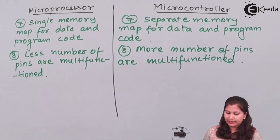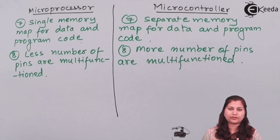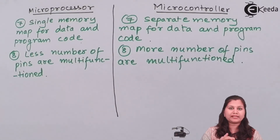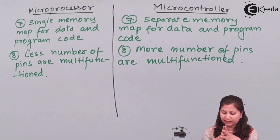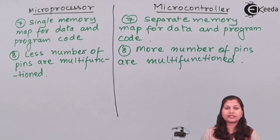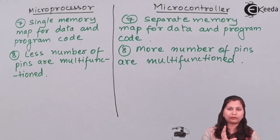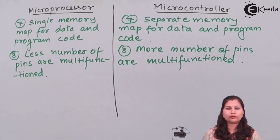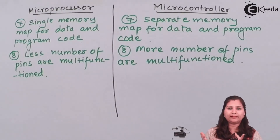The next difference is in terms of application. Microprocessors are used for big, complex applications because they require more hardware and have a higher designing cost. Microcontrollers, with their lower designing cost, are used for single, specific tasks. In an application where only one task needs to be performed by a device, a microcontroller is used, whereas microprocessors are used in larger, more complex applications.